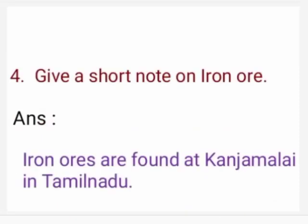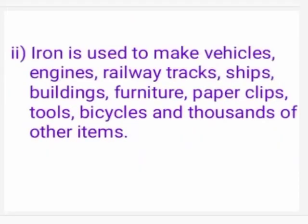Fourth question: give a short note on iron ore. Answer: Iron ores are found at Kanjamalai in Tamil Nadu. Iron is used to make vehicles, engines, railway tracks, ships, buildings, furniture, paper clips, tools, bicycles, and thousands of other items.